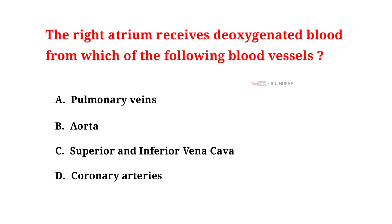The right atrium receives deoxygenated blood from which of the following blood vessels? A. Pulmonary veins. B. Aorta. C. Superior and inferior vena cava. D. Coronary arteries.